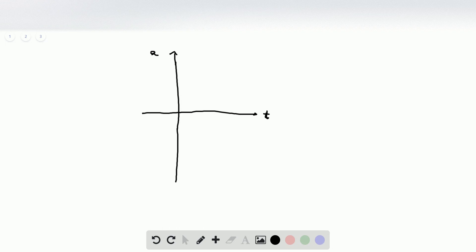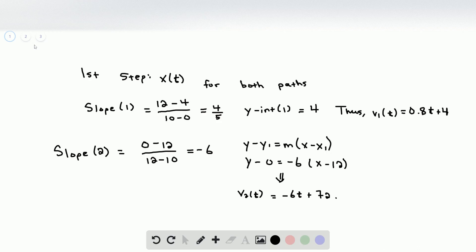We know from time from 0 to 10 seconds, let's say this is 10 seconds, we have a velocity that is positive and is a little shallower. And in fact, if I can find it here, the slope is 4 fifths.